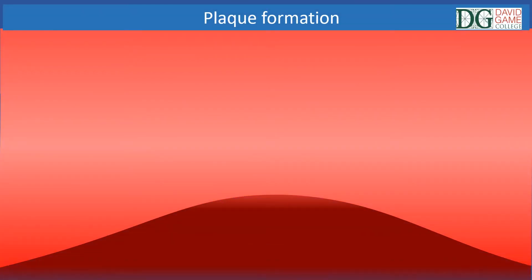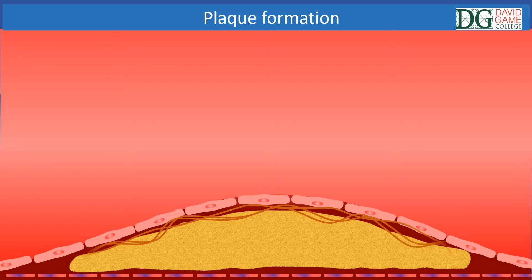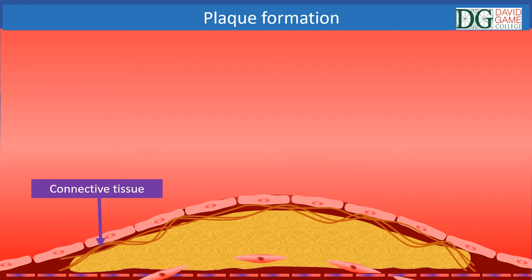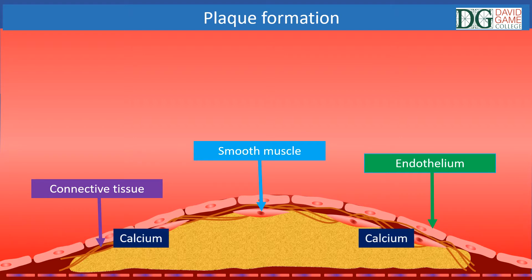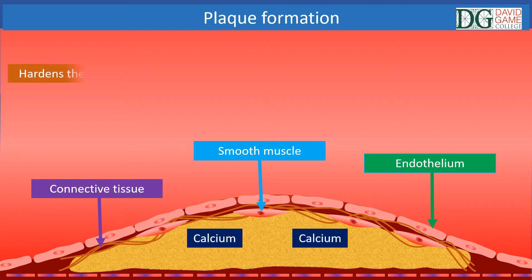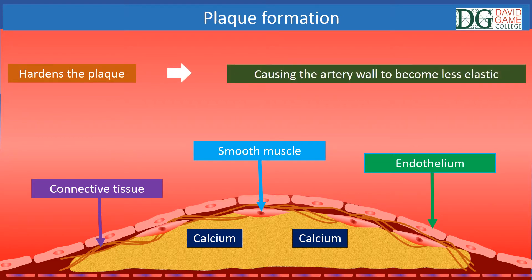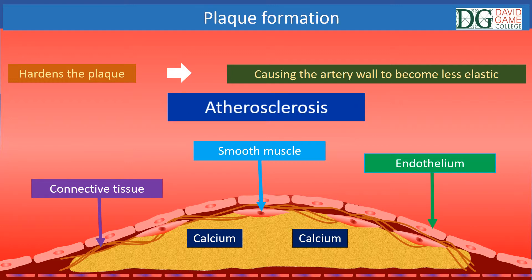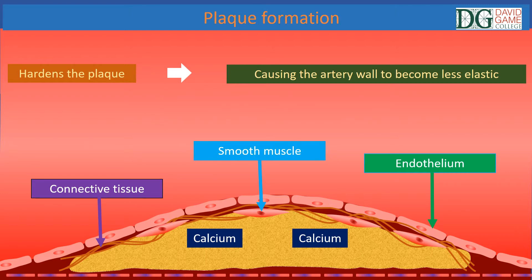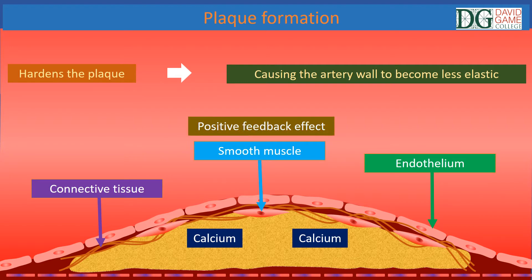Over time, chemicals released by the white blood cells stimulate the proliferation of connective tissue and smooth muscles under the endothelium. Fat deposits become impregnated with calcium salts, causing the plaque to become calcified. This hardens the plaque, causing the artery wall to become less elastic, hence the term hardening of the arteries or atherosclerosis. The narrowing of the artery lumen causes an increase in blood pressure that can further damage the endothelium, resulting in more plaque formation. This is a positive feedback effect.